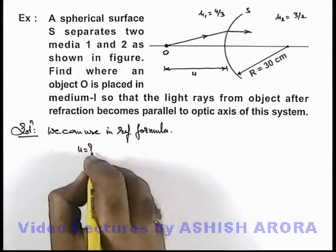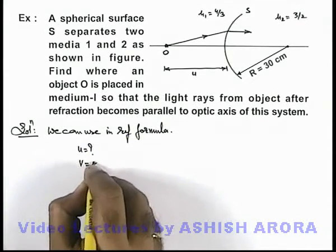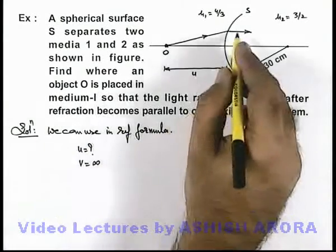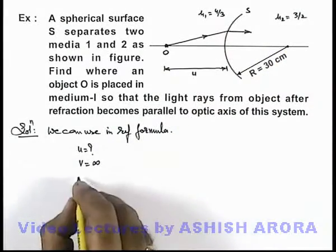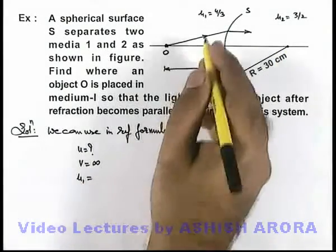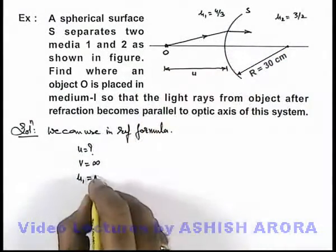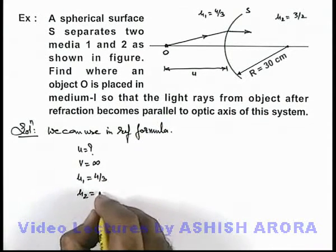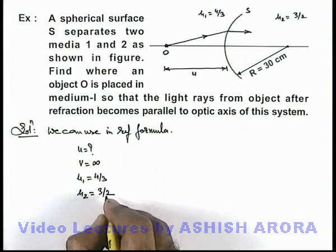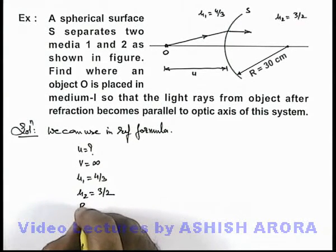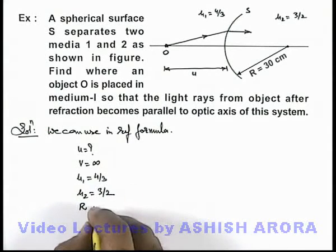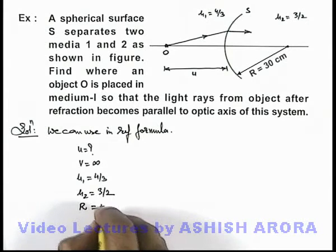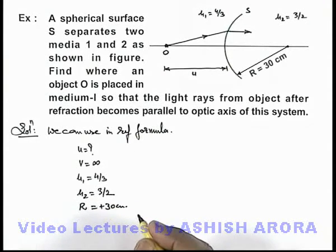Here we are required to find the value of u, and we are given the value of v to be infinite because the rays are becoming parallel. μ₁, the refractive index of the medium in which the incident ray exists, is 4/3. The refractive index of the second medium is 3/2, and the radius of curvature is given to be plus 30 centimeters.